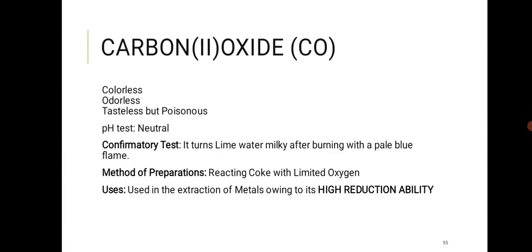Carbon monoxide (CO) is colorless, odorless, and tasteless, but poisonous. It is neutral. The confirmatory test: CO does not directly turn lime water milky. It must first burn in air with a pale blue flame, being converted to CO2, and the CO2 then turns lime water milky. CO is prepared by burning coke with limited oxygen. Its main use is in metallurgy as a reducing agent — it removes oxygen from metal oxides to form CO2.